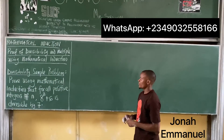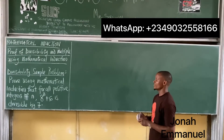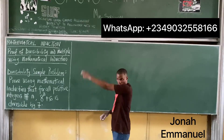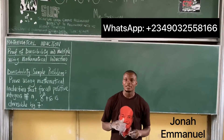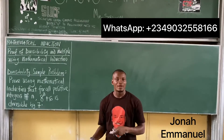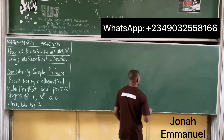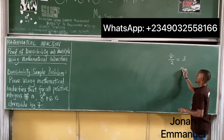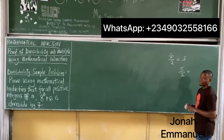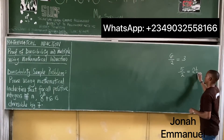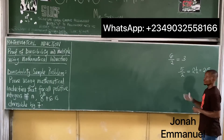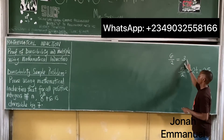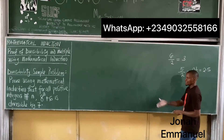The first problem says: prove using mathematical induction that for all positive integers n, 8 to the power n plus 6 is divisible by 7. One number is divisible by another if it can be divided without a remainder. For instance, 6 is divisible by 2 because 6 divided by 2 equals 3 — a whole number. But 5 is not divisible by 2 because 5 divided by 2 gives 2.5.